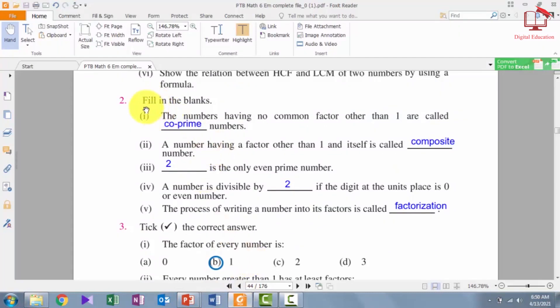Now, question number 2. Fill in the blanks. 1. The numbers having no common factor other than 1 are called coprime numbers.